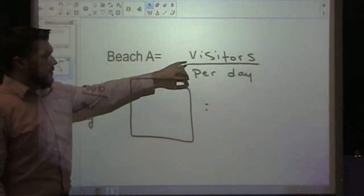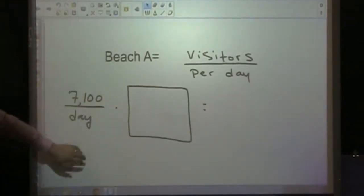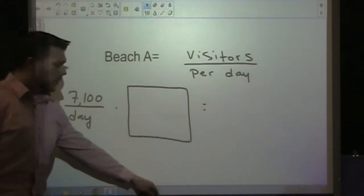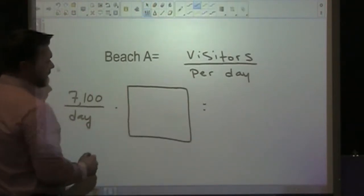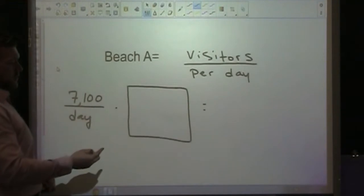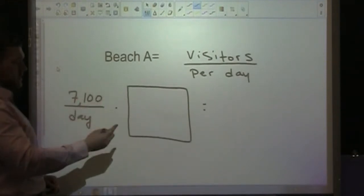Beach A's unit rate right now is visitors per day. We want to change that into visitors per week. So we have 7,100 visitors per day. We're going to multiply that with a conversion factor of seven days in one week, or one week in seven days.